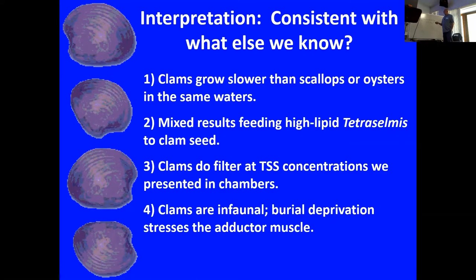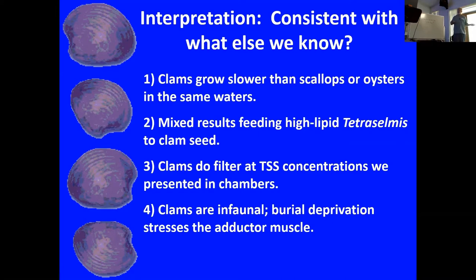In places where people are growing clams and scallops, or they're growing naturally, scallops and oysters get to market in one to one and a half years. Clams here take three to four years. You guys have two, but oysters you can get in a year — in the same place. So clams need more food; that's reasonable.